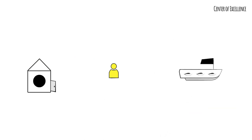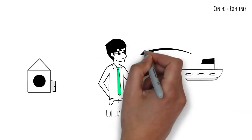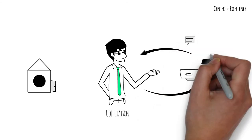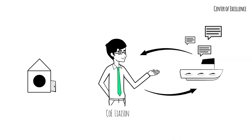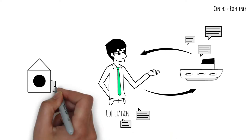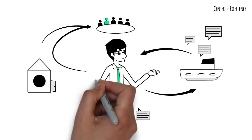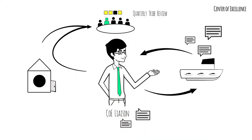These COE members are called COE Liaisons. They also act as a single point of contact for the Tribe and represent their COE's interests in Squad and Tribe ceremonies, like the Quarterly Tribe Review and Sprint Planning.